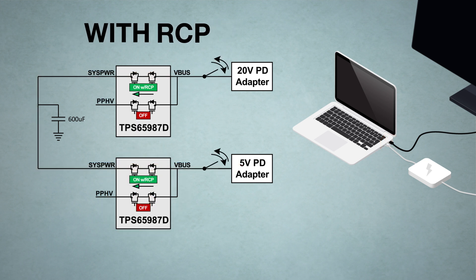With RCP enabled, plugging a higher voltage into your second port isn't so scary, because the current doesn't backflow into your device like it could in an unprotected system.